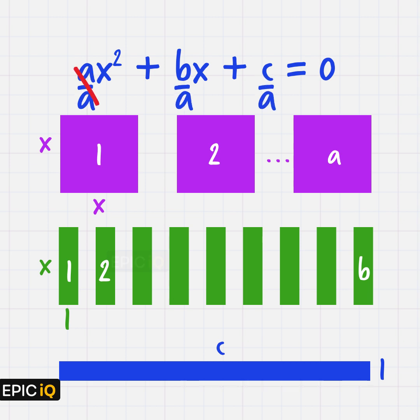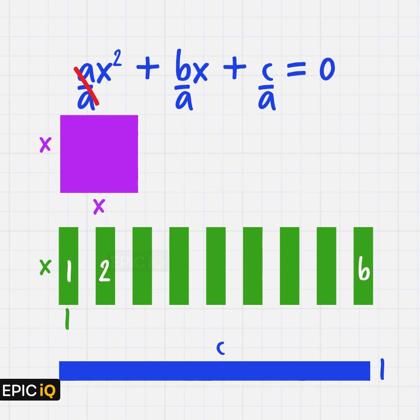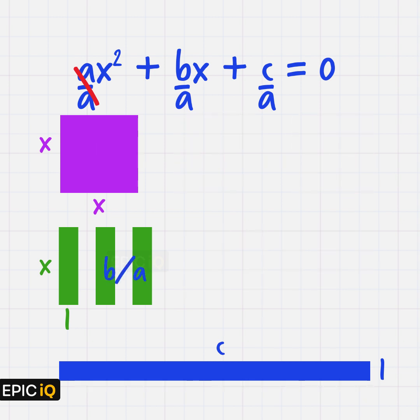Now, we divide it into a parts. So each of these parts will be the quadratic equation x² + (b/a)x + (c/a) = 0.